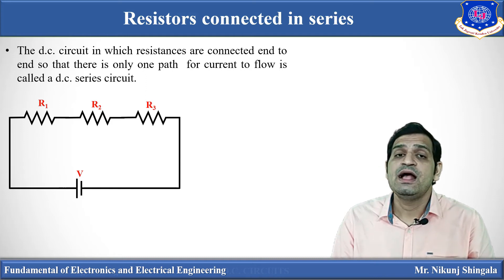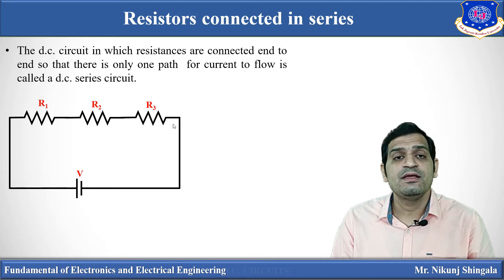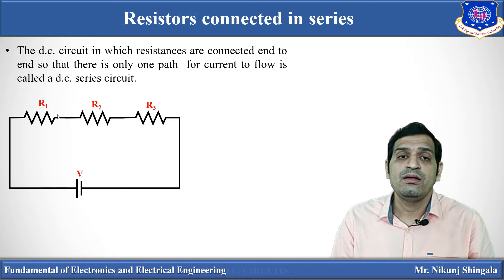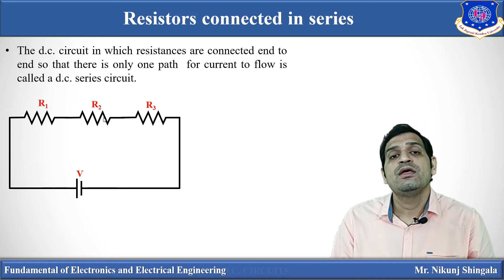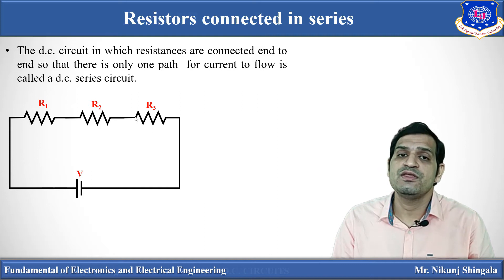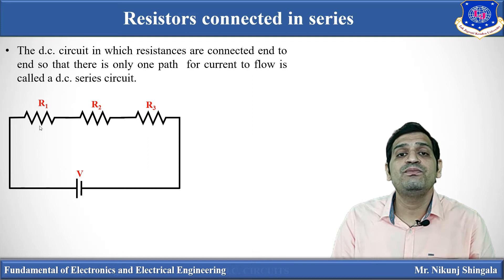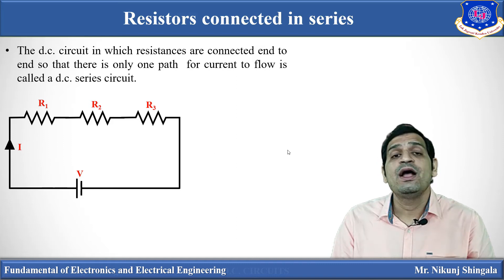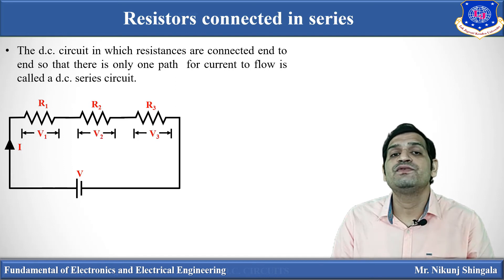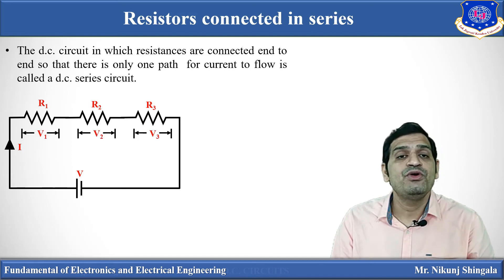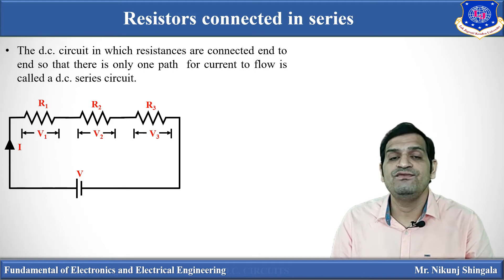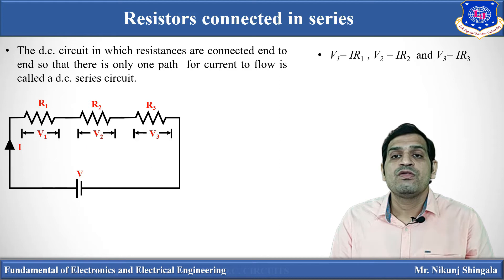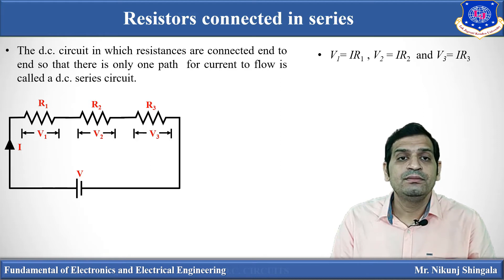Here you can see three resistors R1, R2, and R3 are connected in series — one end of R1 is connected to one end of R2, and the second end of R2 is connected to the first end of R3, and there is only one path for the flow of current. When potential difference is applied, current flows and according to Ohm's Law there is a potential difference across each individual resistor: V1, V2, and V3.